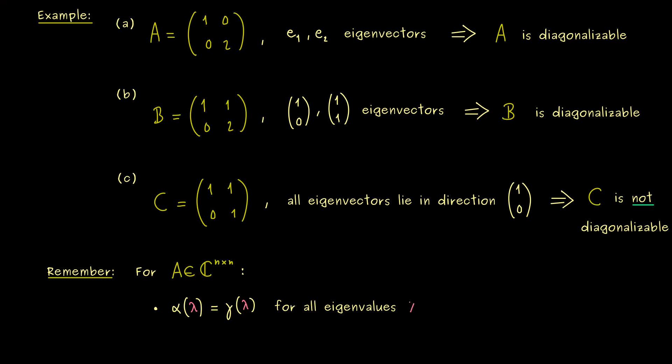However, this property is equivalent to saying that the geometric multiplicity is equal to the algebraic multiplicity. Simply because the algebraic multiplicities always add up to n. Therefore, if we have this equality for all eigenvalues lambda, we find a diagonalizable matrix A.